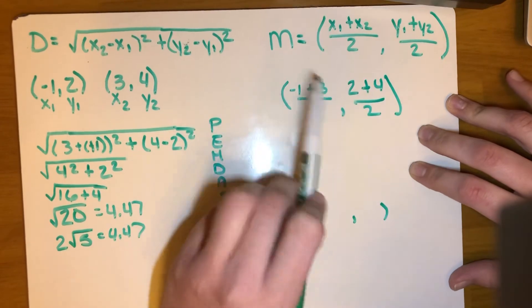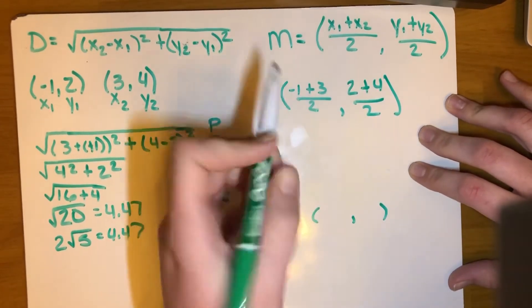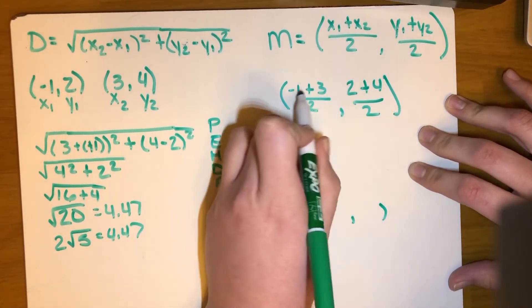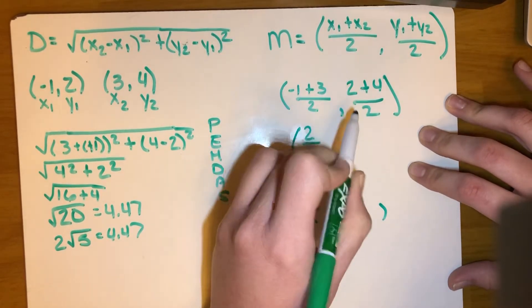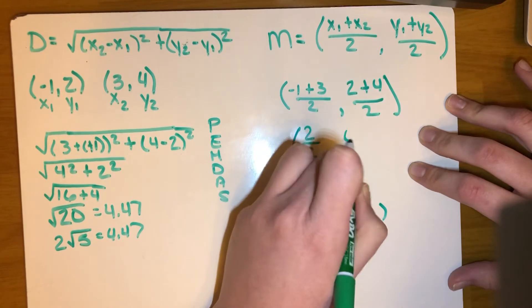So then you're going to do this side of the problem, the x side, add these two together, you get 2, and then for the y side, 2 plus 4 is 6.